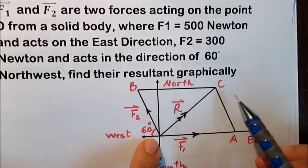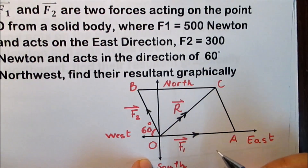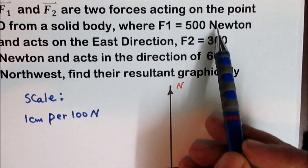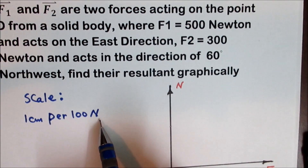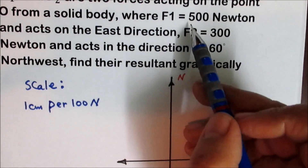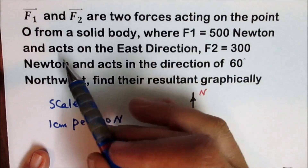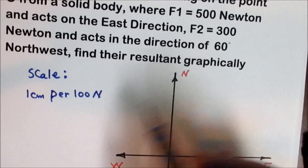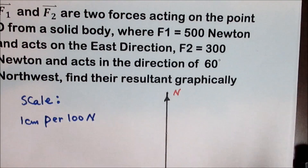When we complete drawing the parallelogram, the diagonal OC represents the resultant of the two forces. Now select a suitable scale. We have two forces of 500 newtons and 300 newtons, so we can use a scale of 1 centimeter per 100 newtons, meaning each centimeter on the graph represents 100 newtons. Starting with F1 on the first side of the parallelogram: F1 is 500 newtons, so divide by the scale of 100 to get 5 centimeters.